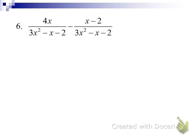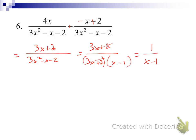Try number 6: stop the video, then start it back up. Did you get 1 over (x − 1)? When you change the minus to a plus, change the signs on x and negative 2. Combine like terms to get 3x + 2 in the numerator. Factor 3x² minus x minus 2 into (3x + 2)(x − 1). Those (3x + 2) factors divide out, giving us 1 over (x − 1).